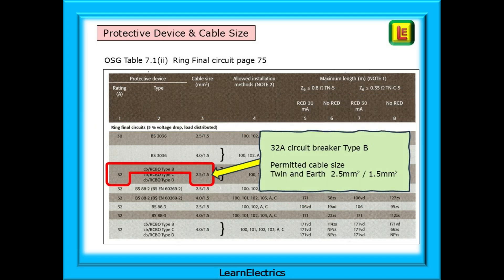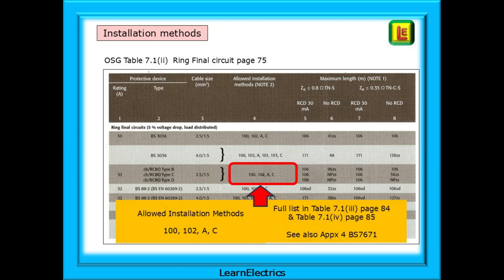Now find the correct protective device on page 75. We have a 32-amp circuit breaker, or CB, Type B, and the table tells us to use twin and earth with 2.5 square millimetre conductors and 1.5 square millimetre earth, or CPC. On to column 4 - what are the allowed installation methods for this circuit, with this breaker, with this size cable?